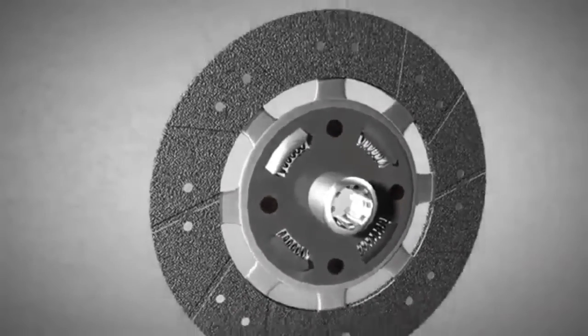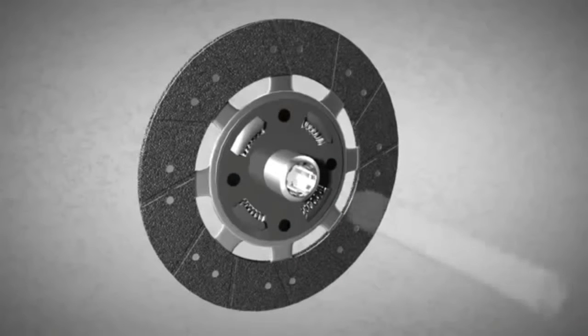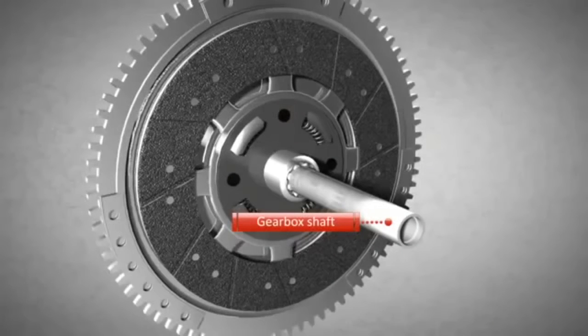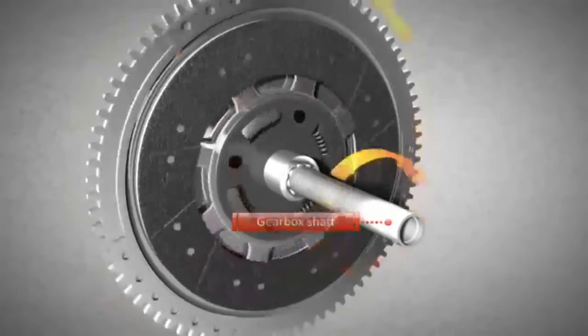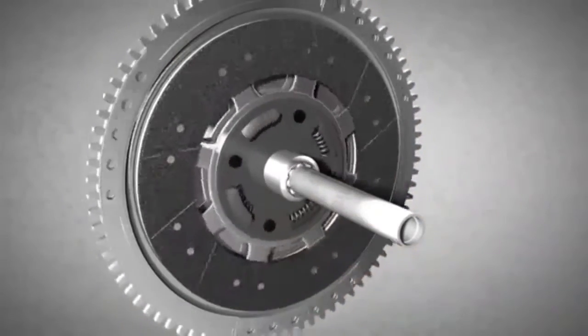The clutch disc is connected to the gearbox through the gearbox shaft. Consequently, the wheels of the vehicle only rotate when the flywheel is in contact with the clutch disc.